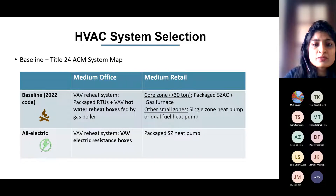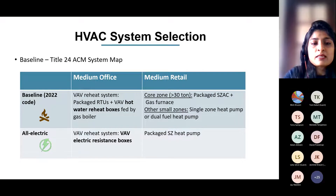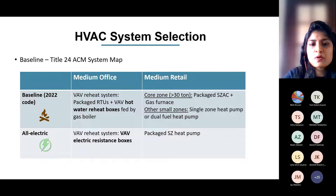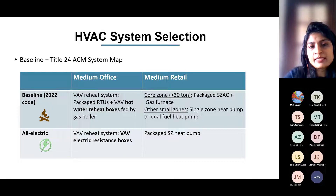There was a question about why electric resistance versus heat pump for all-electric medium office. The more practical system would actually be a central heat pump boiler, but because of modeling limitations — CBEC currently does not have the capability to model a central heat pump boiler system — we are using VAV electric resistance boxes as a placeholder until we have that capability.